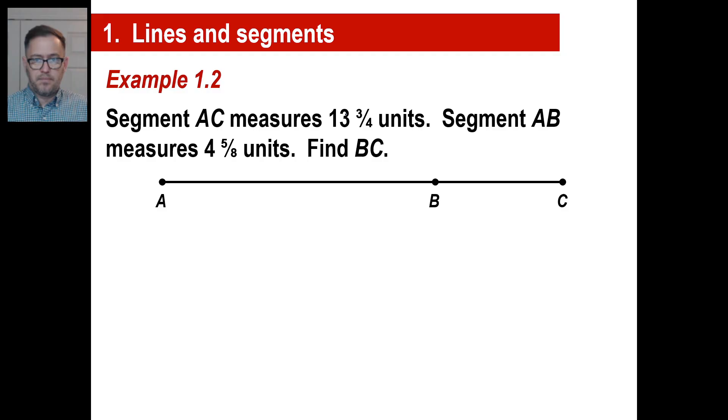For example, segment AC measures 13 and 3 fourths. In other words, from here all the way to there is 13 and 3 fourths units. AB is 4 and 5 eighths. Doesn't look accurate at all, but anyway, we'll just say that it is, because that's way more than half of 4 is not more than half of 13 anyway. So they say, find BC. Well, what operation are you going to use to find the length of BC? The entire thing is 13 and 3 fourths. This part right here, AB, that's just 4 and 5 eighths. So to find BC, we're going to have to subtract, right? So let's do it.